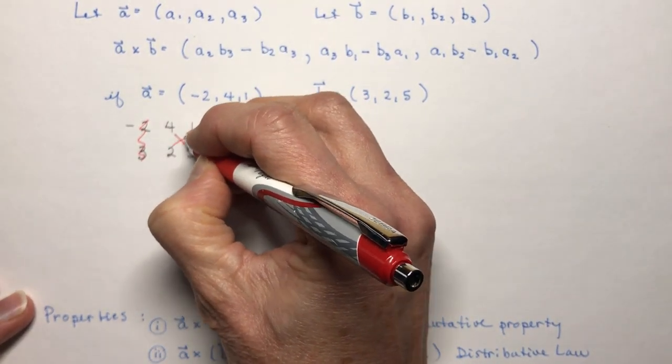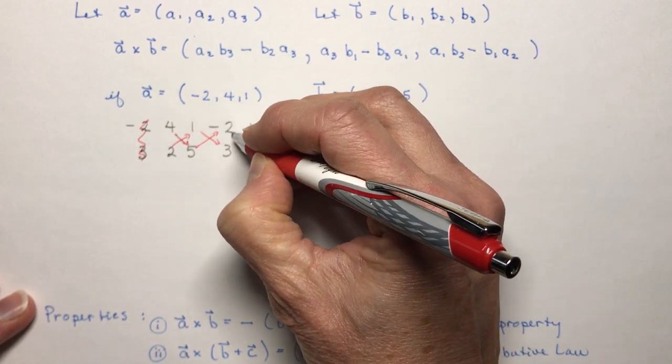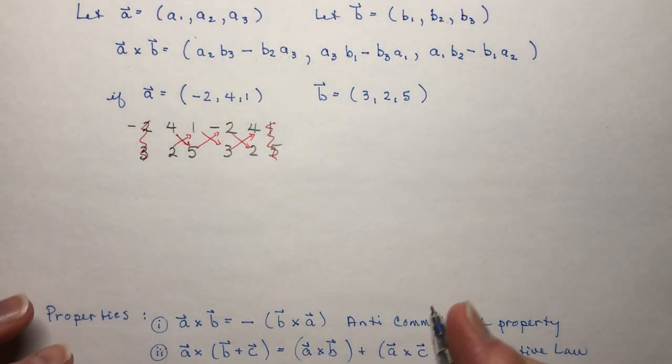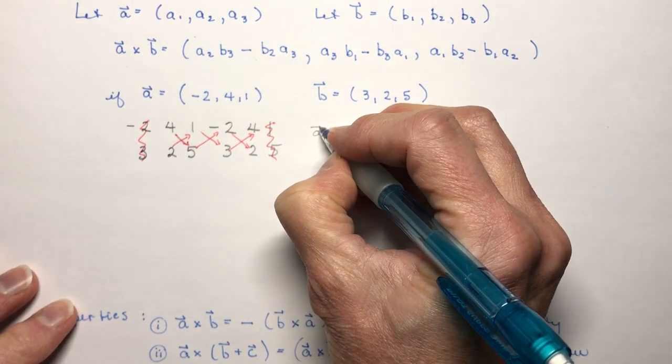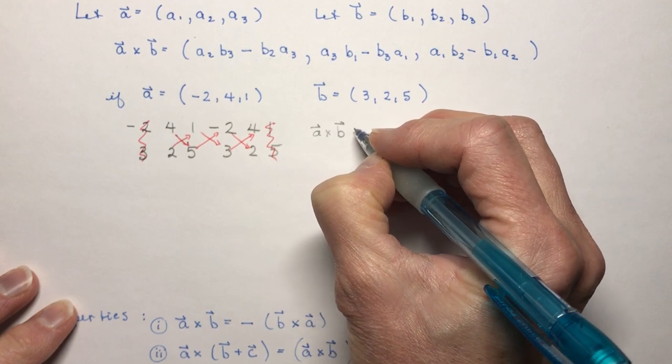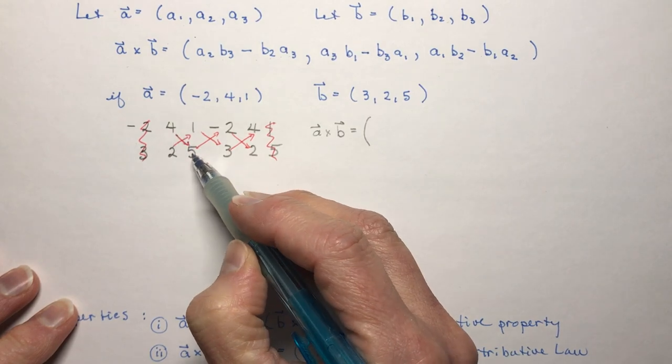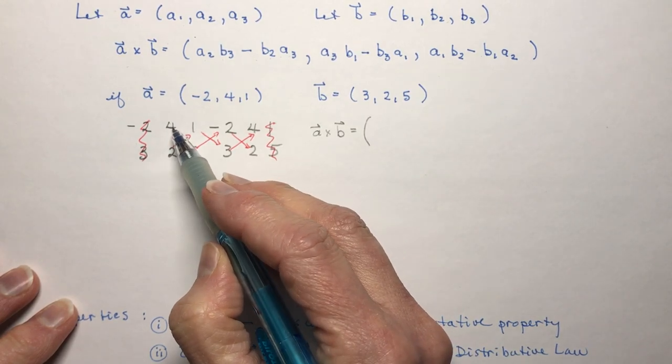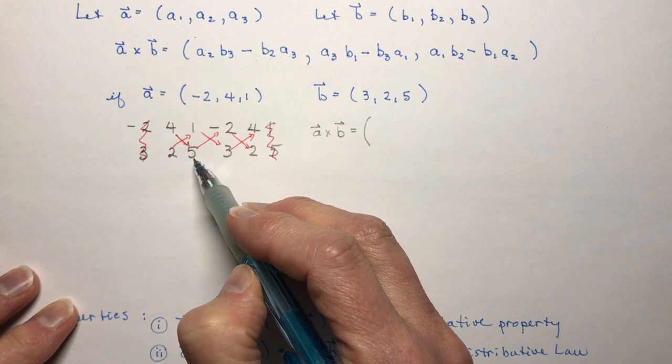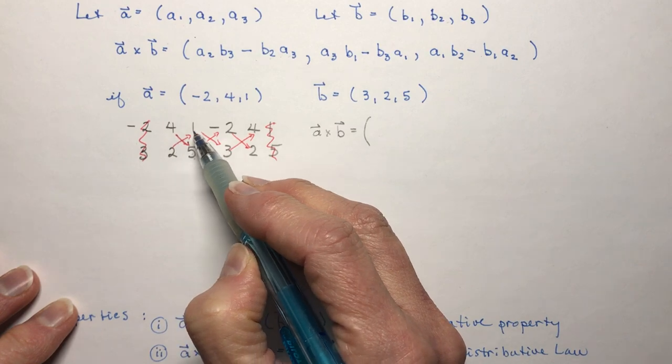So I'm going to do an arrow down and an arrow up now all I have to do to find a cross b and you'll see that this is exactly what that formula says above is I'm going to say okay I have 4 times 5 so this is like a2 here right my second position was a2 times b3 and then I subtract this was my b2 and my a3 so I don't have to memorize this long crazy formula.